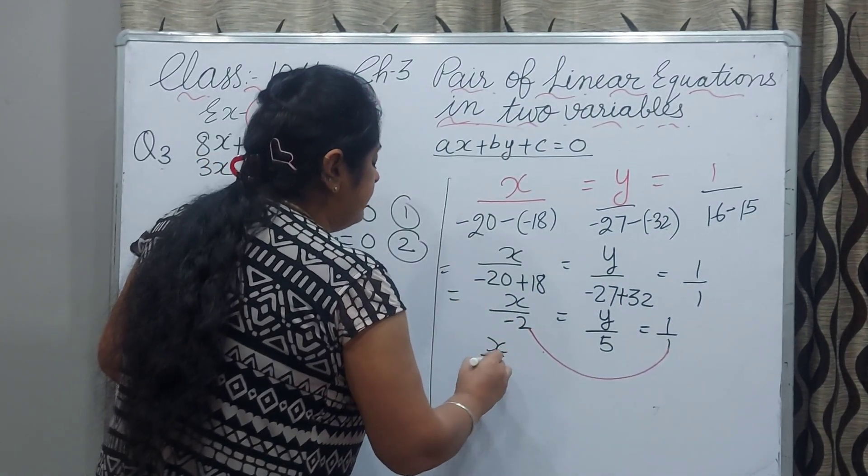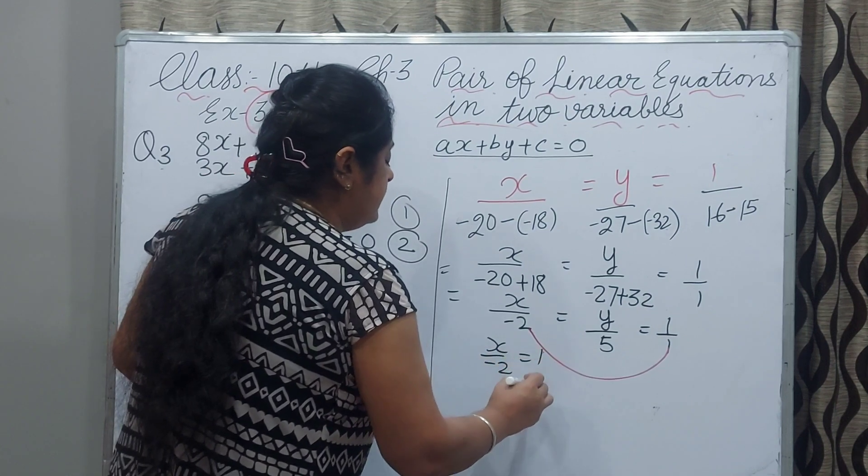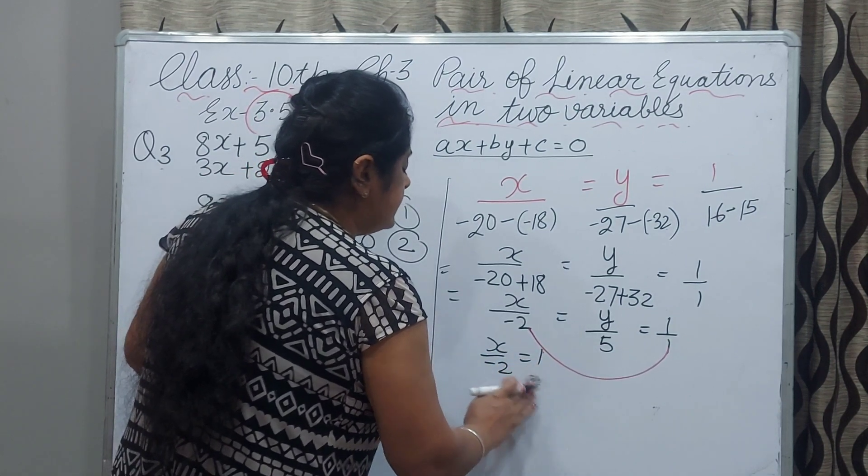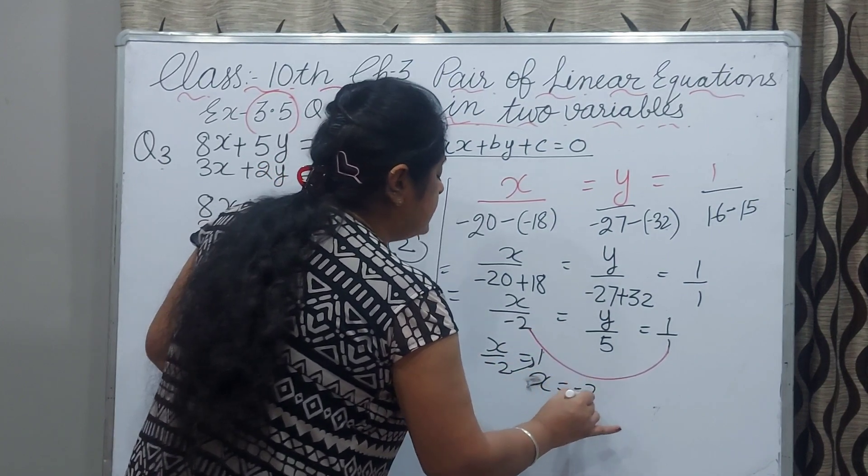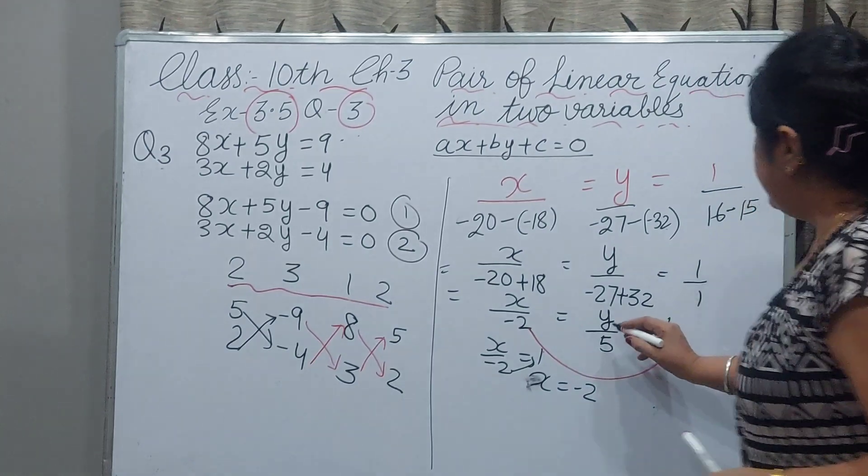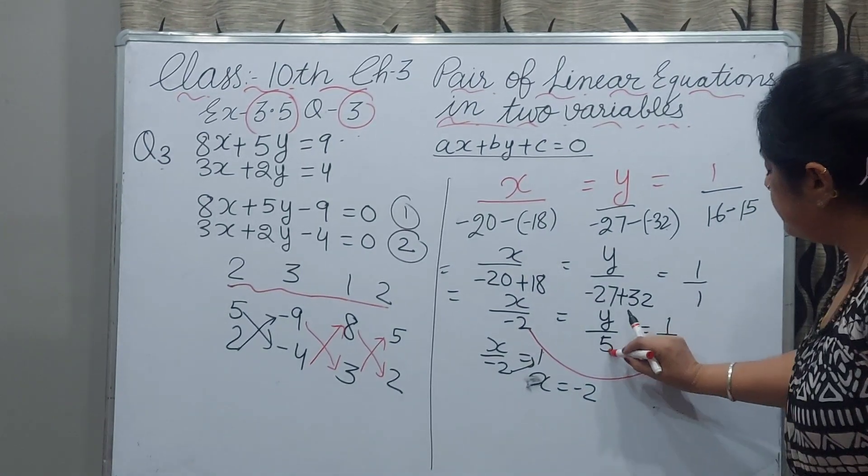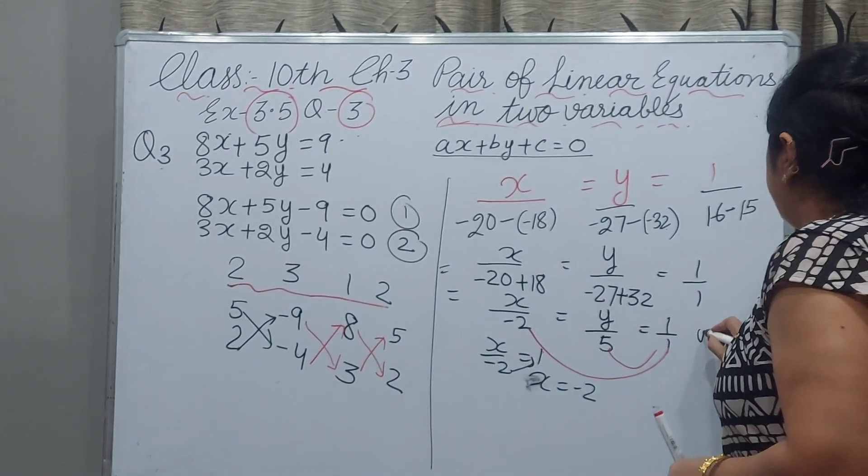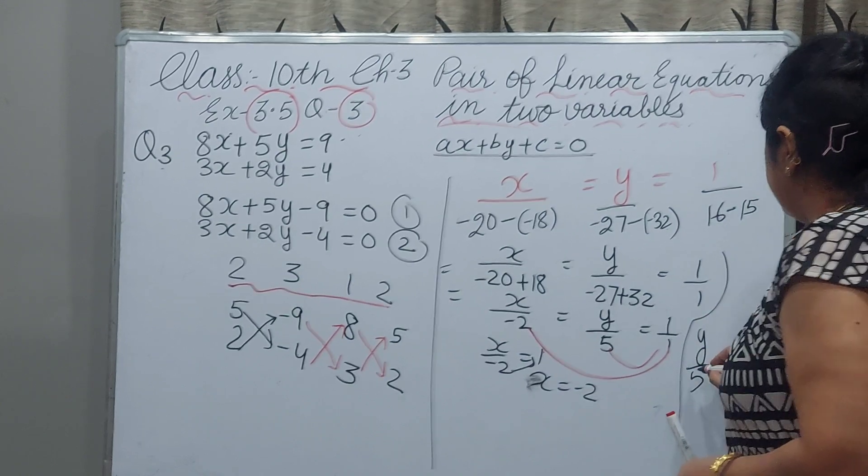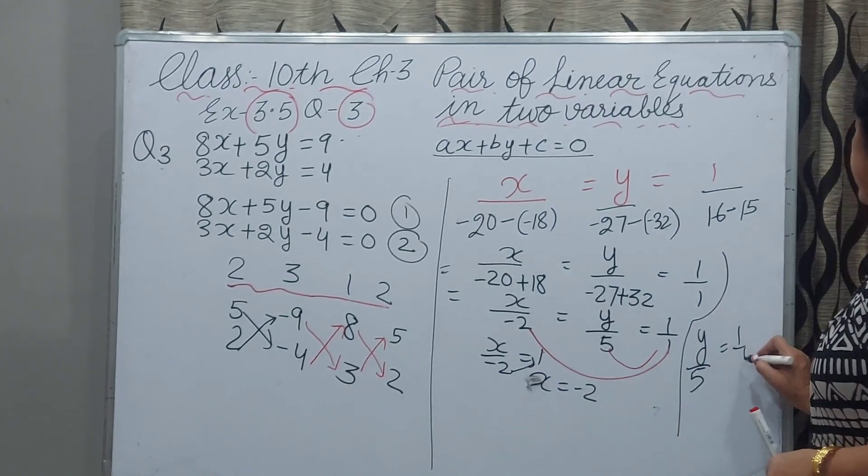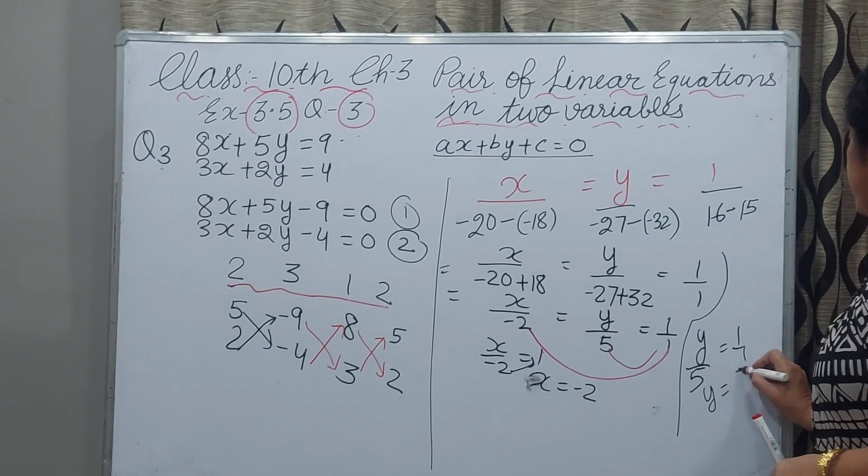x upon minus 2 is 1. It will give, cross multiply, x will be minus 2. And now we compare these two. y by 5 equals 1 by 1, y equals 5.